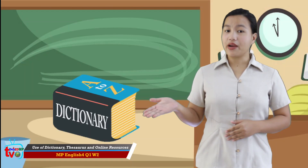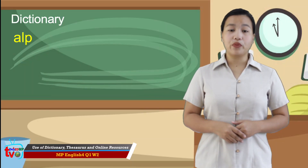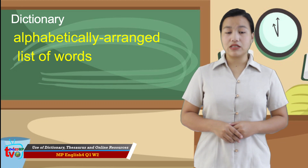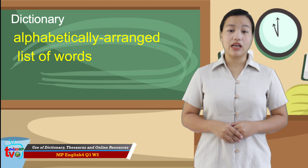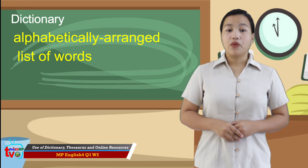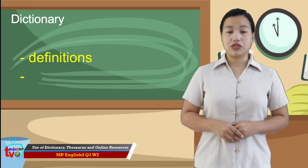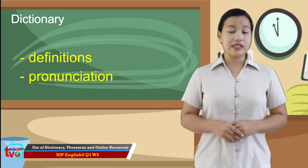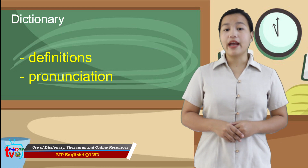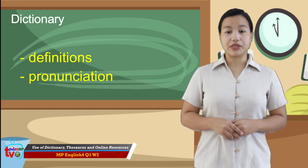The dictionary is a book with alphabetically arranged lists of words in a language with definitions, pronunciations, and other information about the words. Here are the things in the dictionary that can help you in looking up the meaning of words you are looking for.